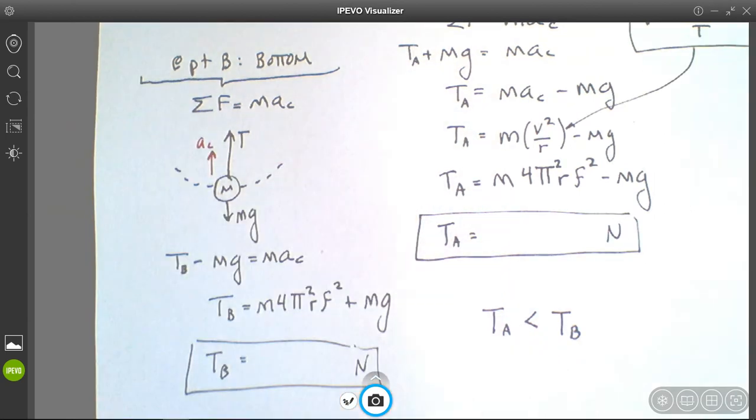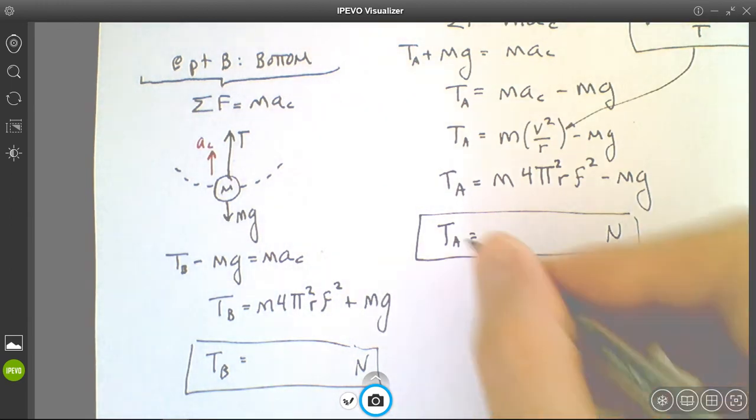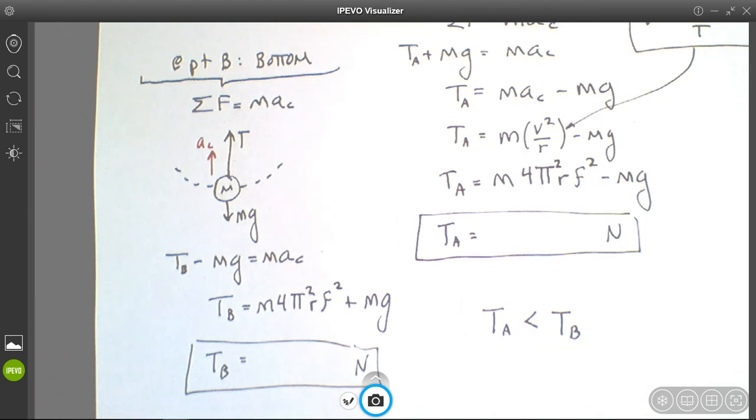You can think of it as the inertia of it. So what you're going to find out is that TA is going to be less than TB. And when you plug in your numbers, you'll see that result. The worked example is also listed on the website.